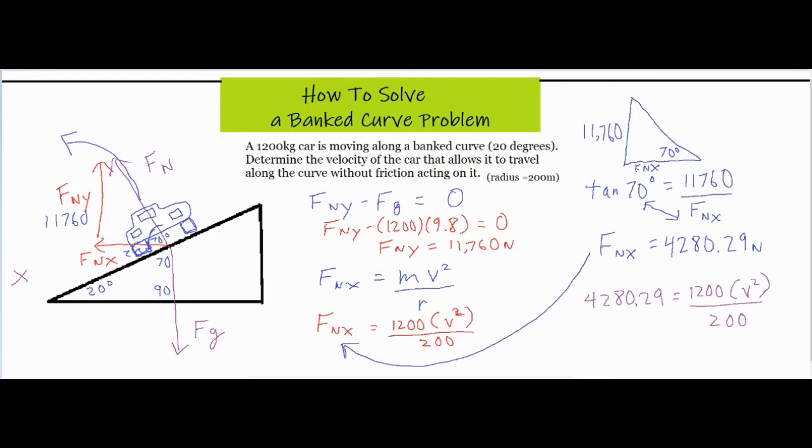Now it looks like we have everything except that v squared. What I'm going to do is take the 200, multiply both sides by 200, divide both sides by 1200, so basically flipping the 200 up over here, the 1200 underneath, and then finally square rooting everything we have to find our final velocity.